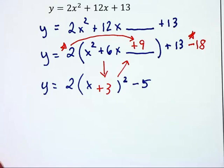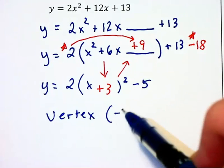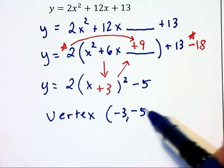Now that we've completed the square, they want us to name the vertex. Well, that's pretty easy. We change the sign of the 3 to negative 3 and bring down our negative 5.